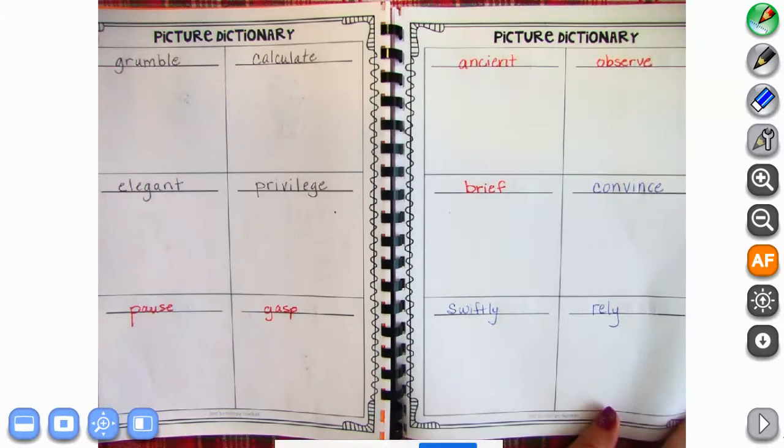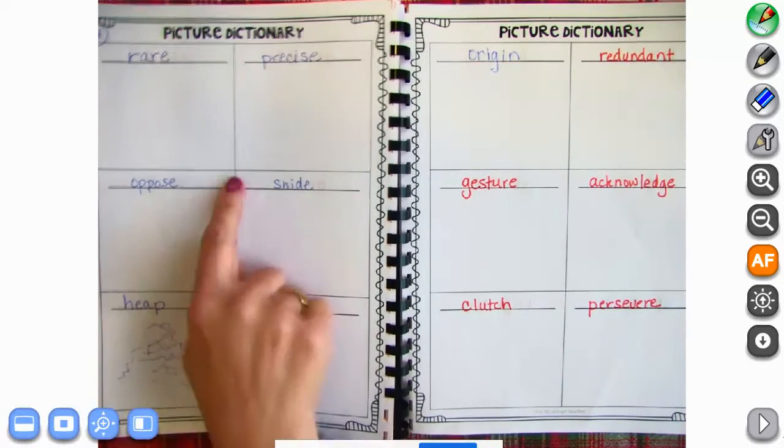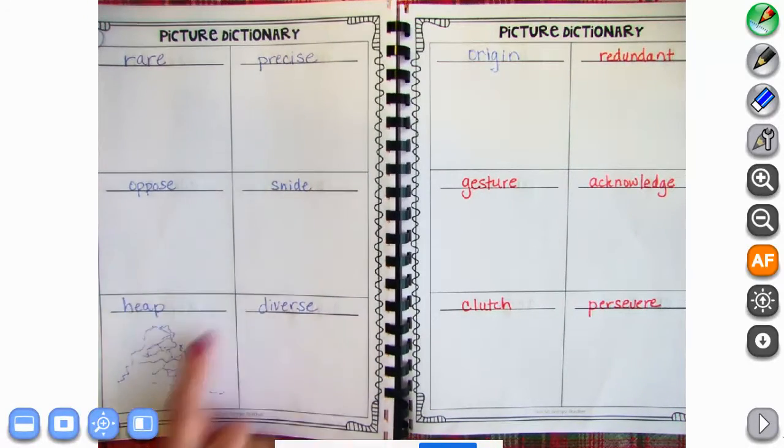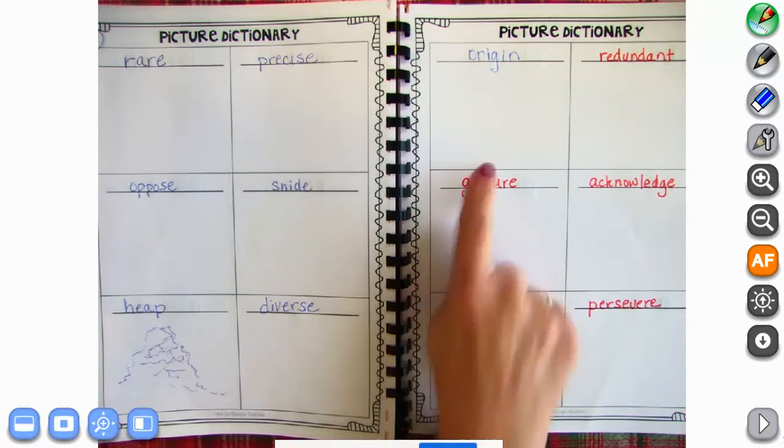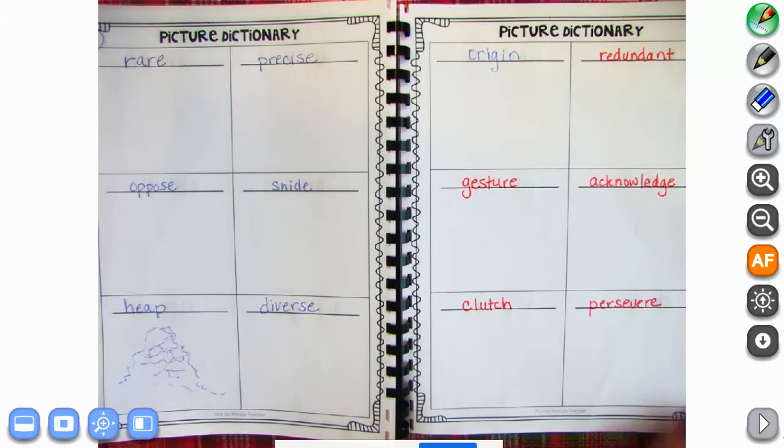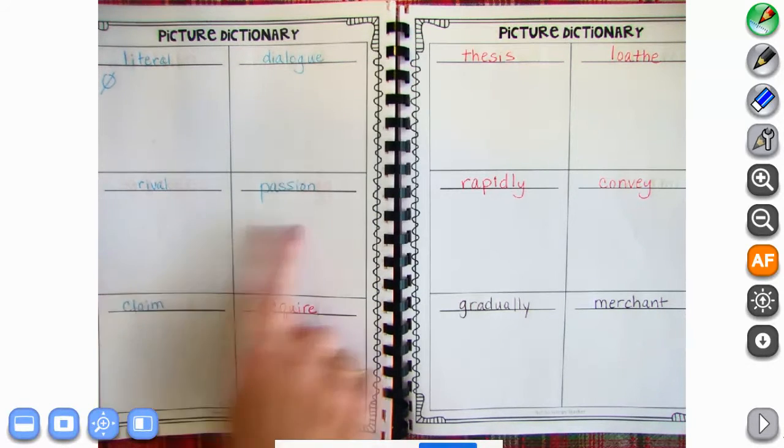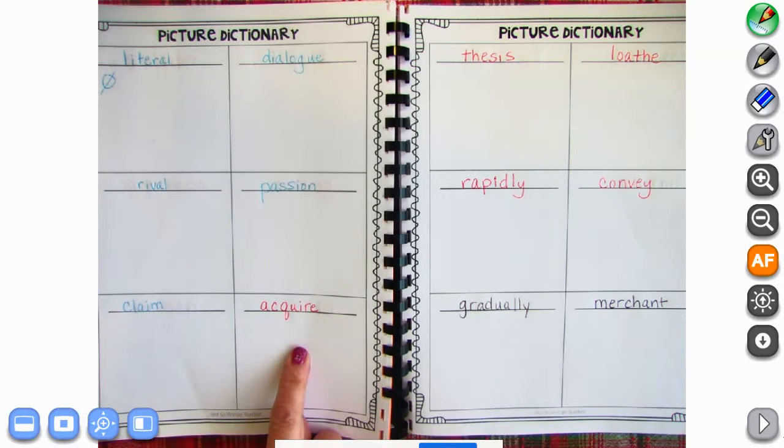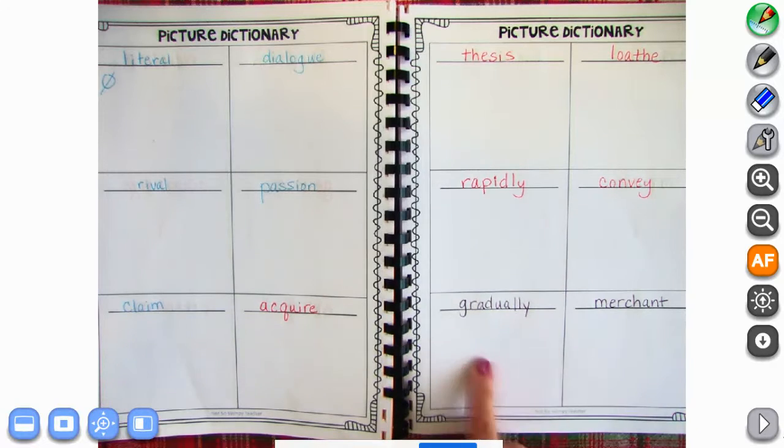You can always go back in the first section and find out what those words mean if you needed to. Rare, precise, oppose, snide, keep, diverse, origin, redundant, gesture, acknowledge, clutch, and persevere. Go ahead and press pause if you need any of those words. And we have literal, dialogue, rival, passion, claim, acquire, thesis, loathe, rapidly, convey, gradually, merchant. Press pause if you need to get any of those please.